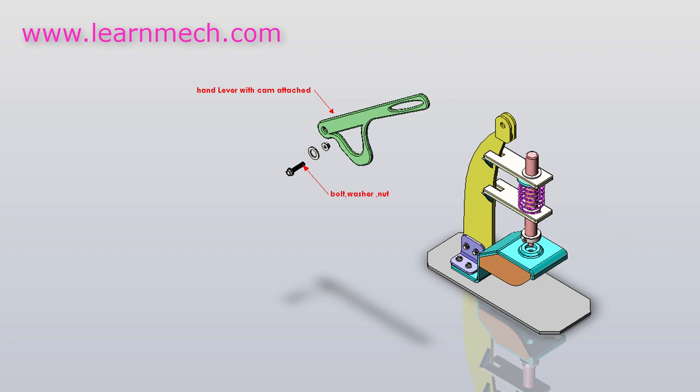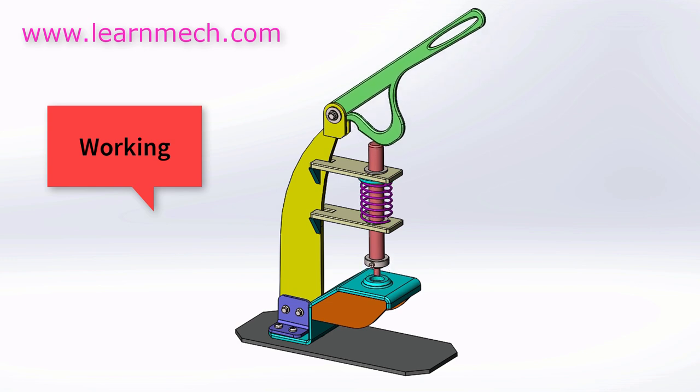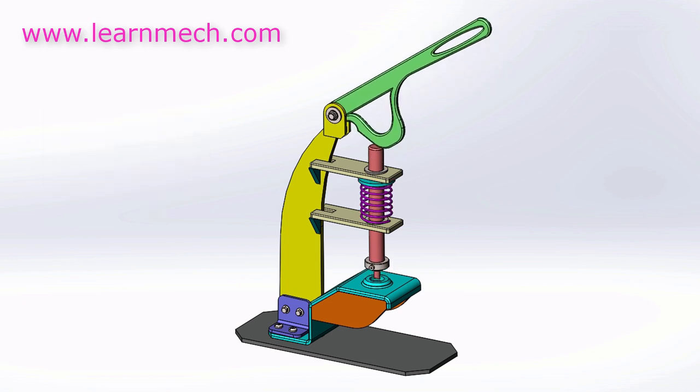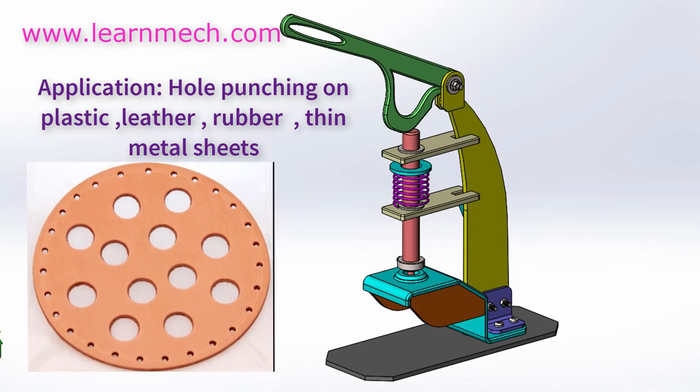At the bottom of the shaft, the punch is attached using a locking washer and screw sub-assembly. The lever, or operating handle, is attached with a cam. As soon as the lever is operated, it will push the shaft downwards with the help of the cam against spring force.